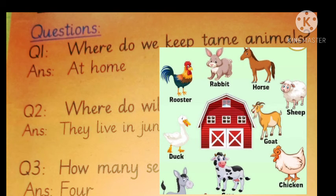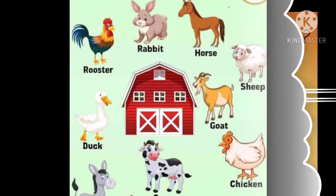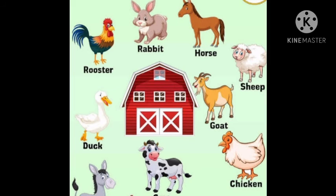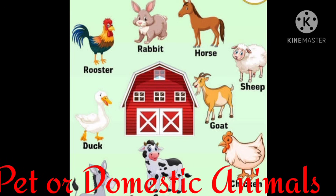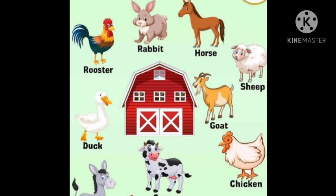Do you know which are the tame animals? For example: rabbit, horse, sheep, goat, hen, donkey, and cow — these are all tame animals and we can keep them at our homes. They are also known as domestic or pet animals.